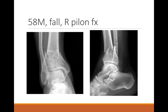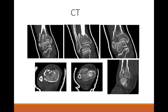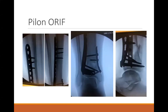This patient is a 58-year-old male who had a fall from a ladder with a right pilon fracture. It was initially splinted and a CT was obtained. He was taken about 10 days later for open reduction internal fixation.